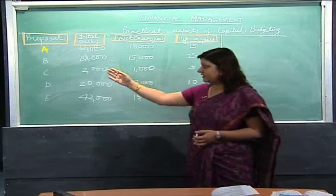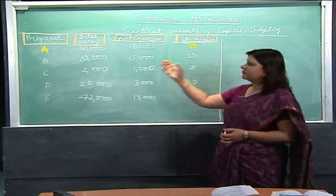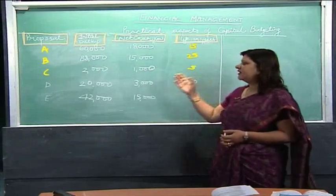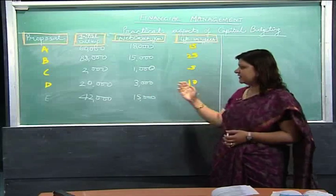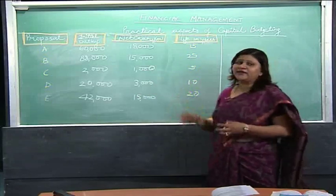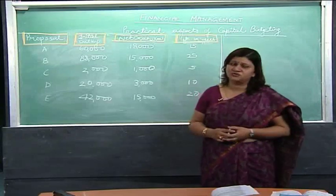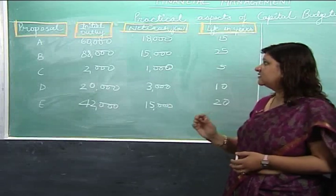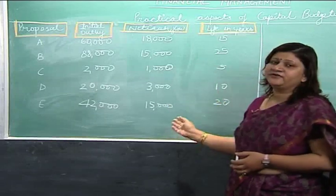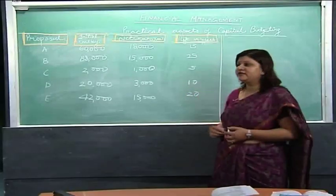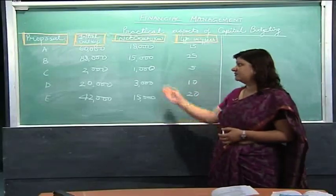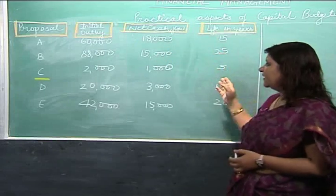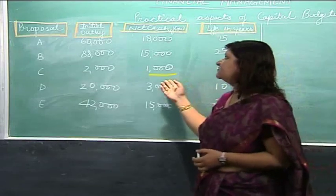Project A has 15 years of life, proposal B has 25 years, proposal C has 5 years, proposal D has 10 years, and proposal E has 20 years of life. Since outlays and inflows are different for each proposal, we cannot simply decide which proposal to accept. For instance, if we decide on the basis of inflows alone, we might go for proposal A, but its life is 15 years while proposal C has only 5 years and a much lower cash flow.